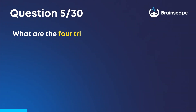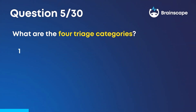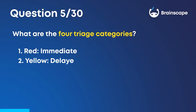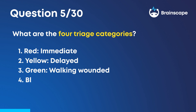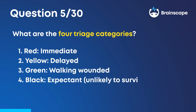Question 5. What are the four triage categories? 1. Red — Immediate. 2. Yellow — Delayed. 3. Green — Walking Wounded. 4. Black — Expectant, unlikely to survive or dead.